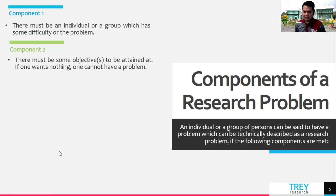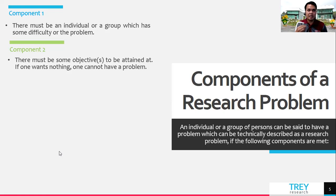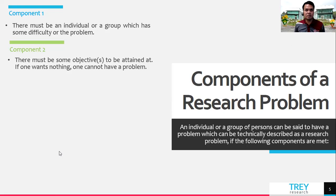For example, continuing with the farmers — if the farmers technically know how to operate machines, and you as the researcher find out there is no intervention, you can educate them as part of your research. After training them on operating a tractor or other machinery, you assess if they gained the capability and capacity to operate it. That's a research. You trained them, assessed them, evaluated their knowledge. You solved your first objective — to train or educate the people. There must also be alternative means or courses of action for obtaining the objectives.